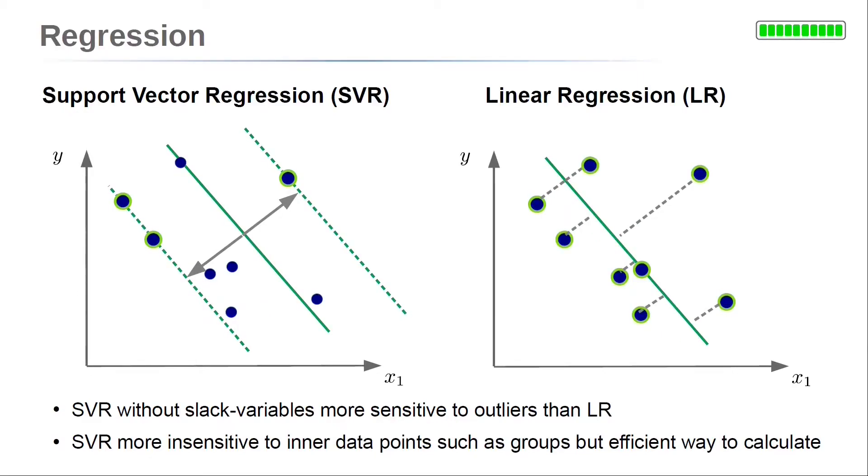So, in total, linear regression seems a bit more to take all data points into account than support vector regression. However, support vector regression is a very efficient algorithm, because it is determined just by the support vectors, which cover the margin boundaries.